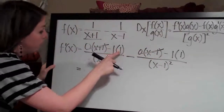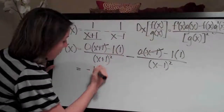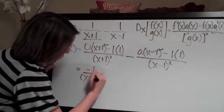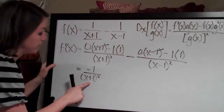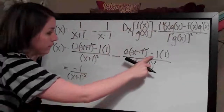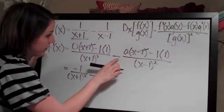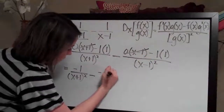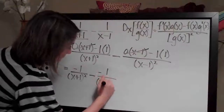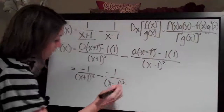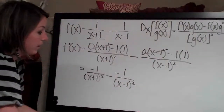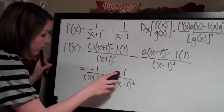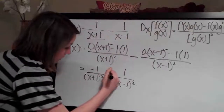So 1 times 1 is just 1, giving us a negative 1 on top over x plus 1 squared. Then over here, we put the minus sign and 1 times 1 is 1, so we have negative 1 over x minus 1 squared. We now have minus and then a negative, so those cancel each other out and become a positive.